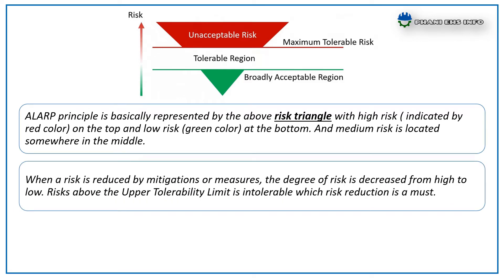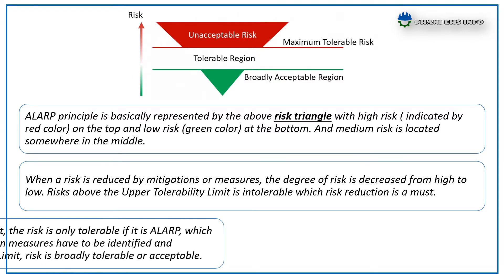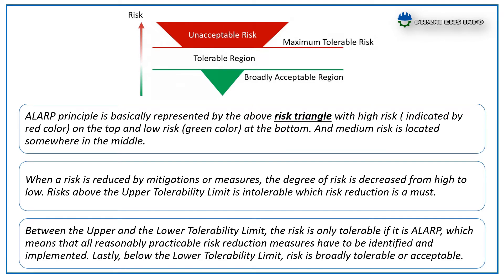When a risk is reduced by mitigations or measures, the degree of risk is decreased from high to low. Risk above the upper tolerability limit is intolerable, and risk reduction is a must. Between the upper and lower tolerability limits, the risk is only tolerable if it is ALARP, meaning all reasonably practicable risk reduction measures have been identified and implemented. Below the lower tolerability limit, risk is broadly acceptable.